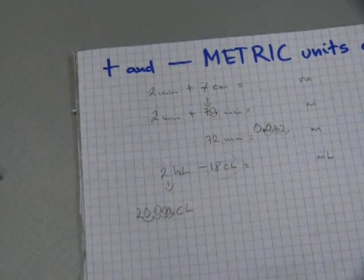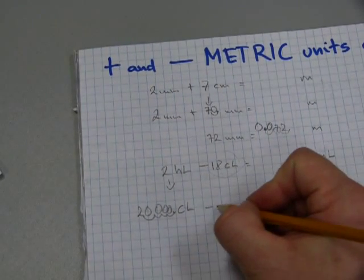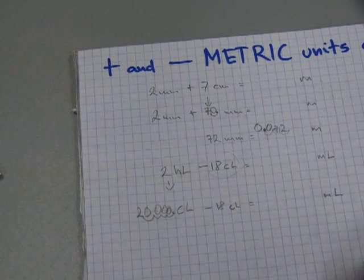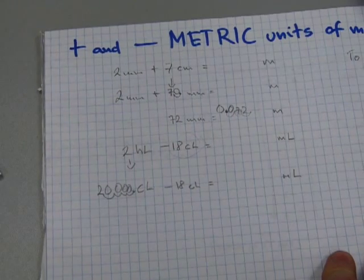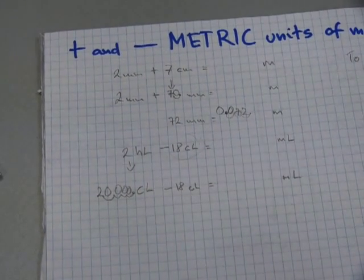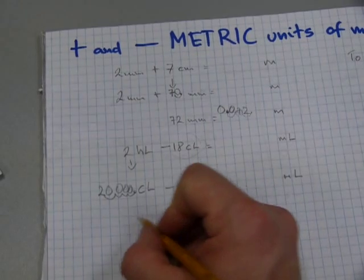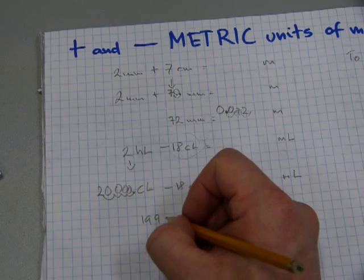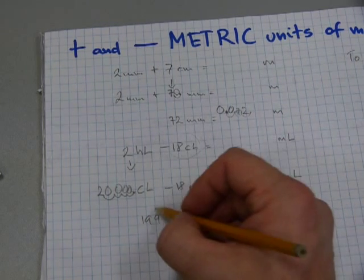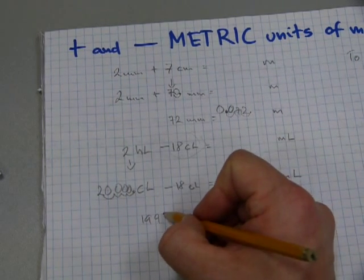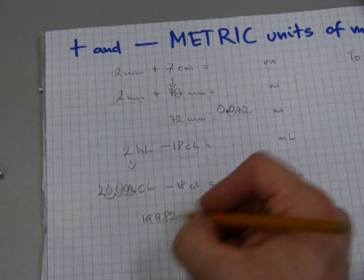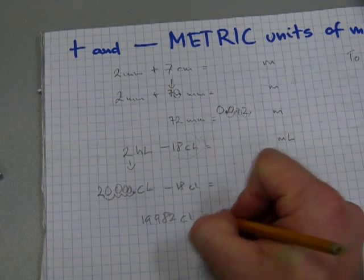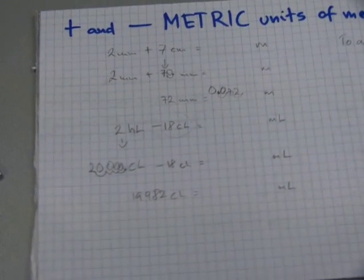So, 2 hectoliters is 20,000 centiliters minus 18 centiliters equals so many milliliters. 20,000 centiliters minus 18 is approximately 19,900. And let me see, if that was 20, this would be 80, but it's 82 because that's only 18. 19,982 centiliters need to be converted into milliliters.